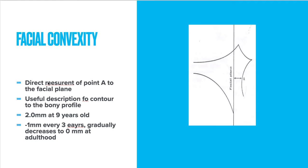Facial convexity is a direct measurement of the distance from Point A to the facial plane. This distance is a useful description of the contour of the bony profile. The normal value is two millimeters at nine years old, and it decreases one millimeter every three years, gradually reaching zero millimeters at adulthood.